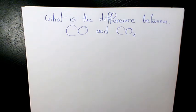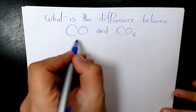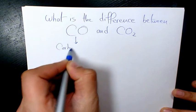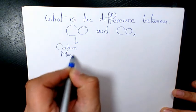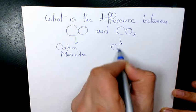In this video I want to show you the differences between carbon dioxide and carbon monoxide. So CO is carbon monoxide and CO2 is carbon dioxide.